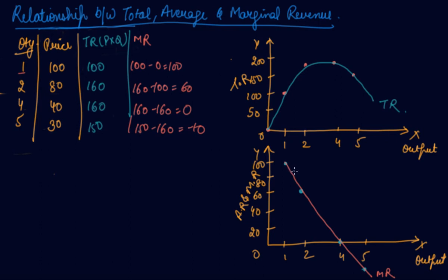Then you can draw your average revenue. At 1 it is 100, at 2 it is 80, at 4 it is 40, at 5 it is 30. So this is your marginal revenue, this is your average revenue, and these will be straight lines.